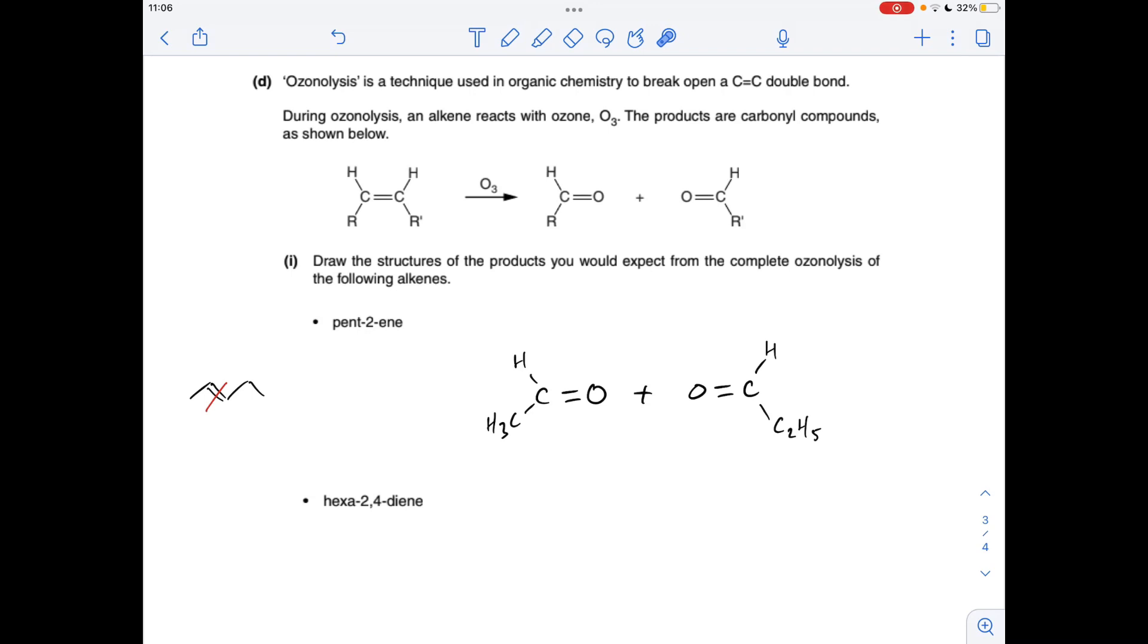Okay, so for part D we've got to apply this reaction information to a couple of alkenes. So pent-2-ene, you see I've broken that double bond there, so we're going to get basically C double bond O where the two carbons of the double bond are. So the two organic products would be those.